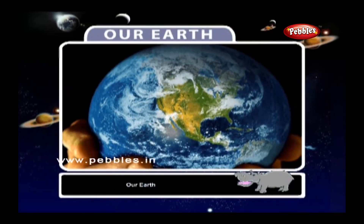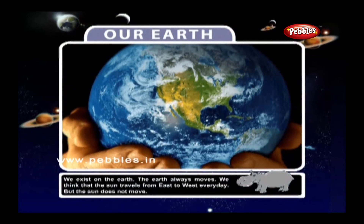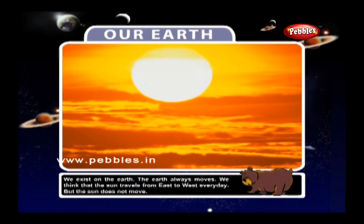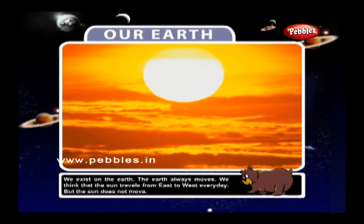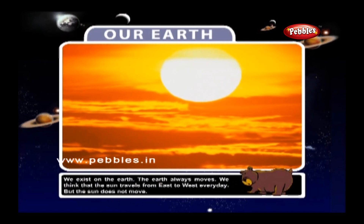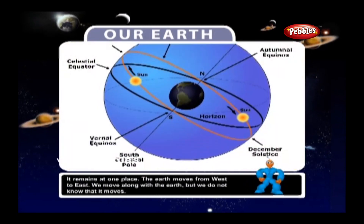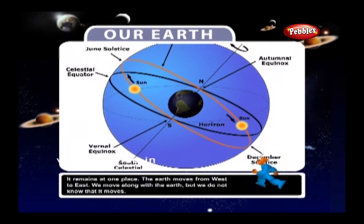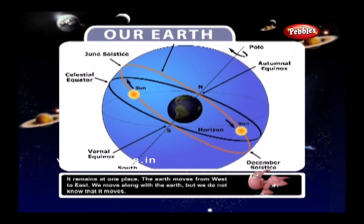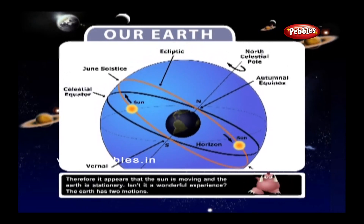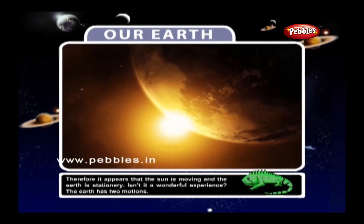Our Earth — we exist on the Earth and the Earth always moves. We think that the Sun travels from East to West every day, but the Sun does not move. It remains at one place. The Earth moves from West to East. We move along with the Earth, but we do not know that it moves. Therefore, it appears that the Sun is moving and the Earth is stationary.